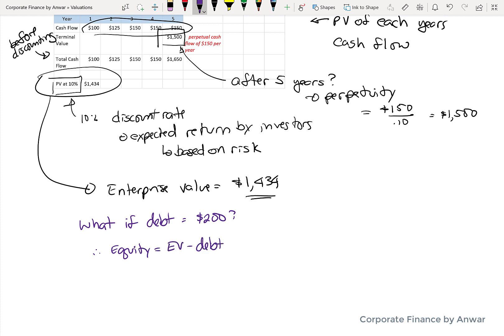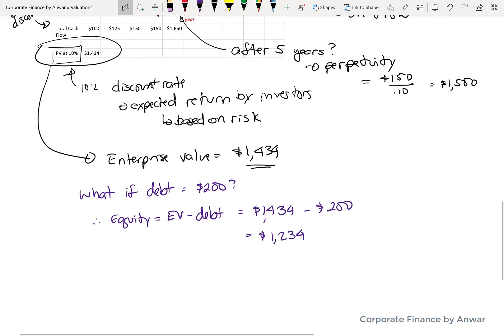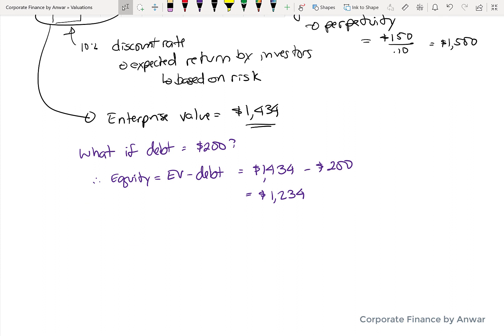So what if debt is $200 million for this company? If we want to calculate the equity value, which would be the value of all the stocks that are trading on the marketplace if it's public, then you go back to the formula where enterprise value is equal to debt plus equity. Therefore, equity is going to be enterprise value minus debt, or $1,434 minus $200, which is $1,234 or $1.234 billion.